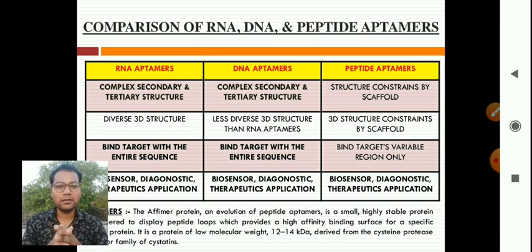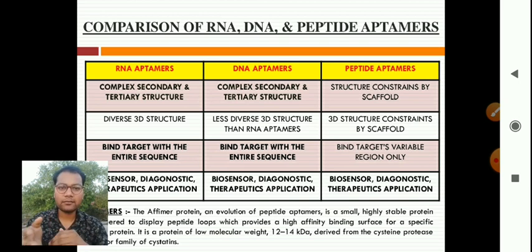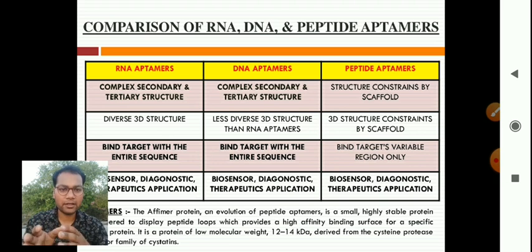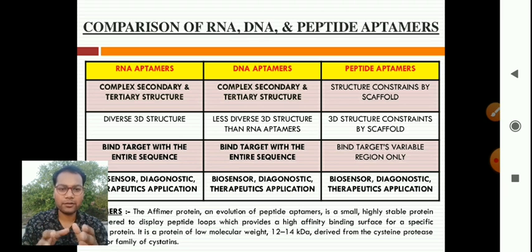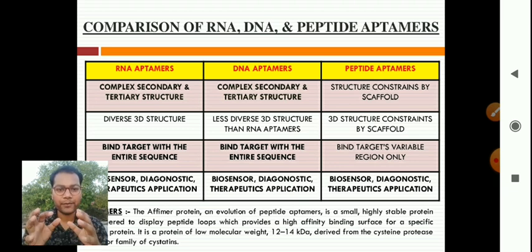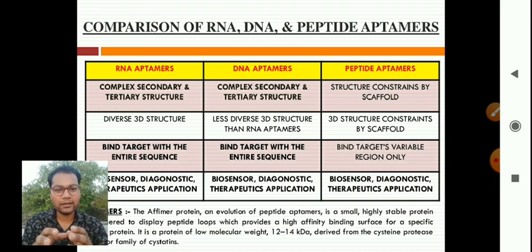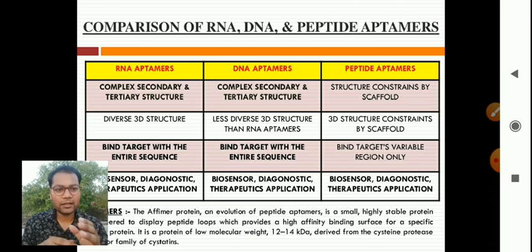Comparing RNA, DNA, and peptide aptamers: RNA aptamers have complex secondary and tertiary structures, as do DNA aptamers, while peptide aptamers have structures constrained by a scaffold. RNA aptamers form more diverse 3D structures; DNA aptamers have less diverse 3D structures than RNA aptamers. RNA and DNA aptamers both bind target with the entire sequence, whereas peptide aptamers bind the target via a variable region only.